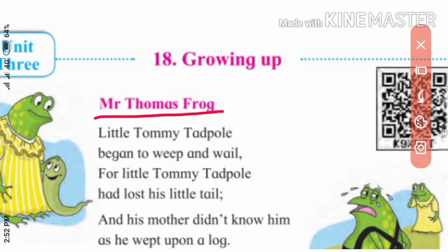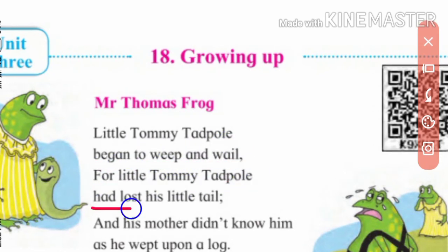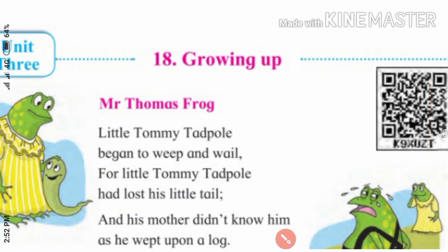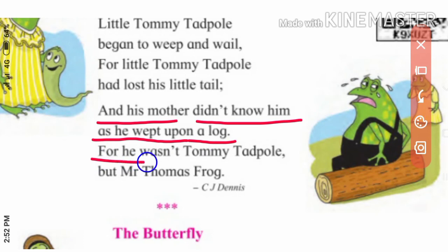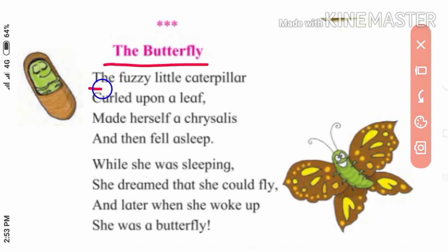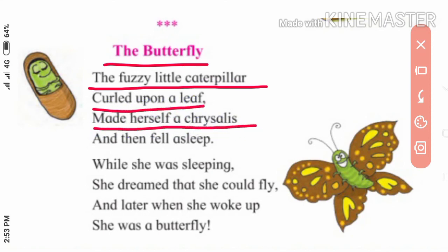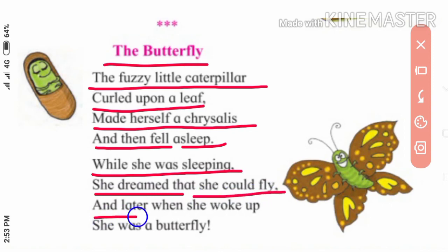Mr. Thomas Frog: Little Tommy Tadpole began to whip and wail, for little Tommy Tadpole had lost his little tail, and his mother did not know him as he wept upon a log, for he wasn't Tommy Tadpole but Mr. Thomas Frog. The Butterfly: The fuzzy little caterpillar called upon a leaf, made herself a chrysalis and then fell asleep. While she was sleeping she dreamed that she could fly, and later when she woke up she was a butterfly.